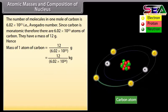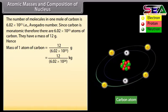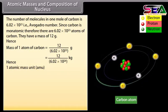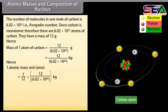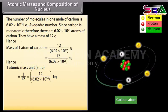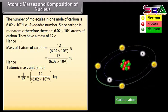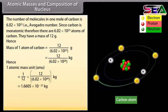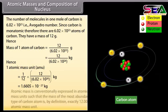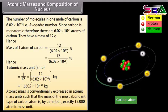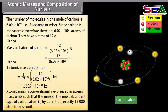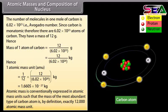That is equal to 12 / (6.02 × 10²⁶) kilograms. Hence, one atomic mass unit is equal to (1/12) × 12 / (6.02 × 10²⁶) kg, which equals 1.6605 × 10⁻²⁷ kg. Atomic mass is conventionally expressed in atomic mass units such that the mass of the most abundant type of carbon atom is, by definition, exactly 12 atomic mass units.